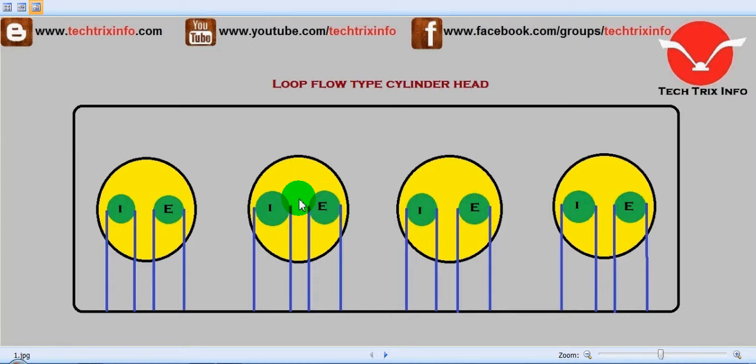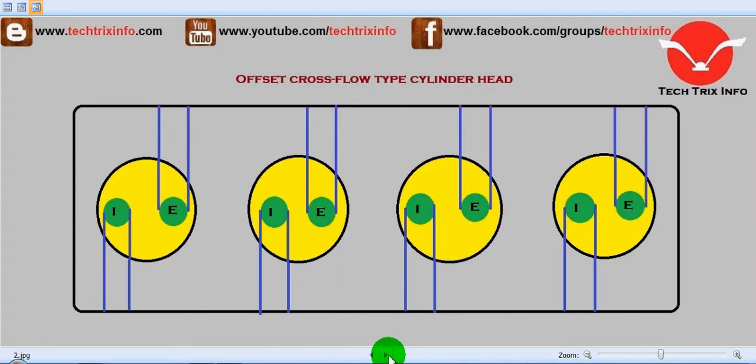In this type, the inlet and the exhaust manifolds are on the same side, which facilitates pre-heating of the intake air. You can see the inlet manifold and the exhaust manifold of all these cylinders on the same side as marked over here. This is called a loop flow type cylinder head.